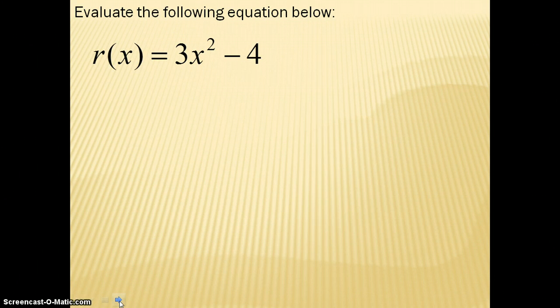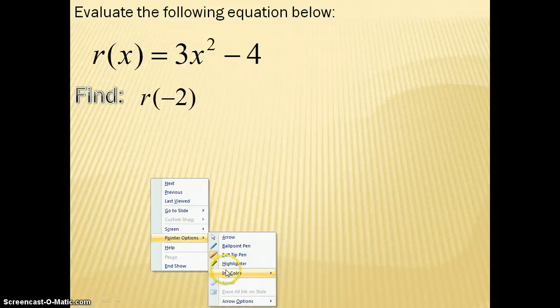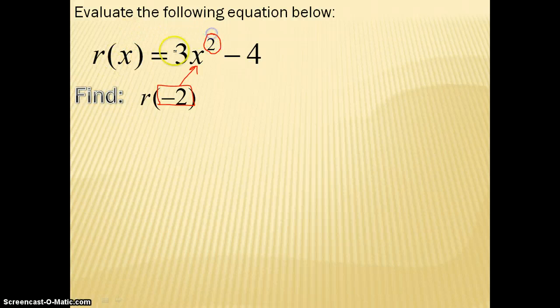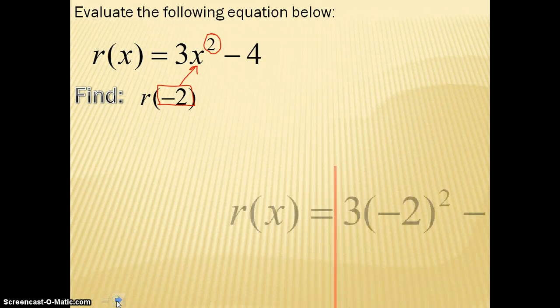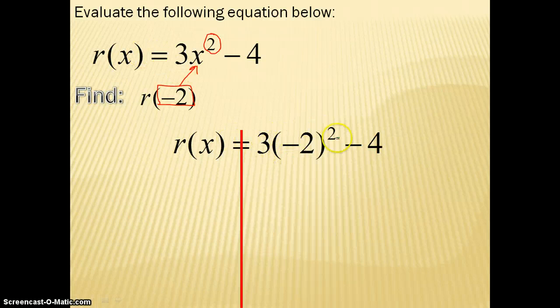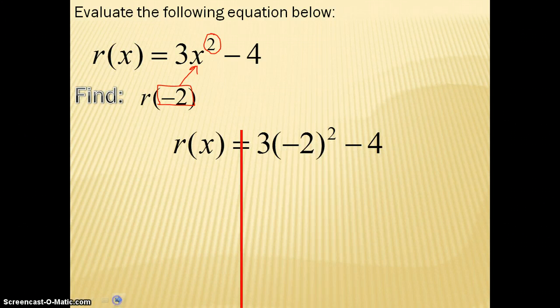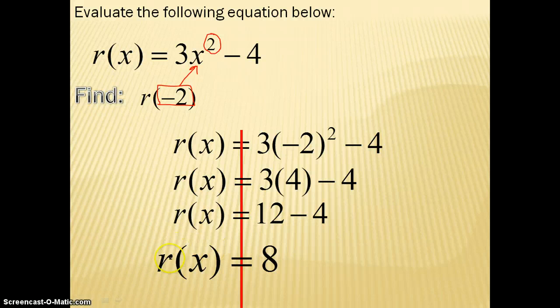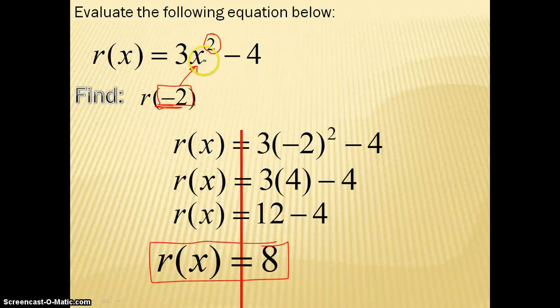Let's look at another problem. Evaluate the following equation below: r of x equals 3x squared minus 4. Find r of negative 2. Again, whatever is in parentheses is your x value, so we're going to substitute it in for x. Because we have x squared, when we substitute in we have to make sure to put parentheses. So we'll have r of x equals 3 times negative 2, in parentheses, squared minus 4. Negative 2 squared gives me 4, then 3 times 4 is 12, and 12 minus 4 gives me 8. So r of x equals 8. Whatever in parentheses is your x — substitute it in and solve.